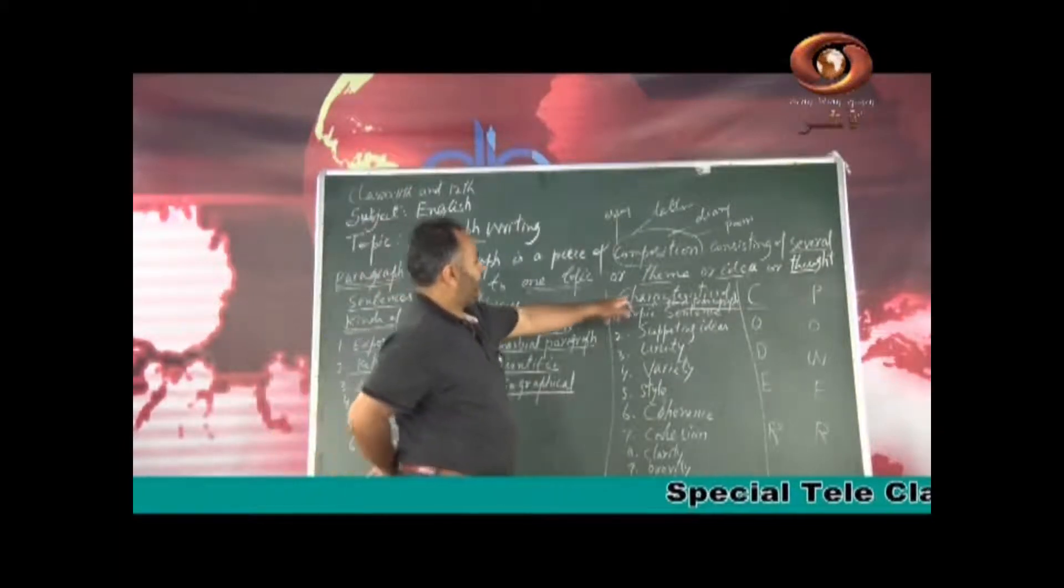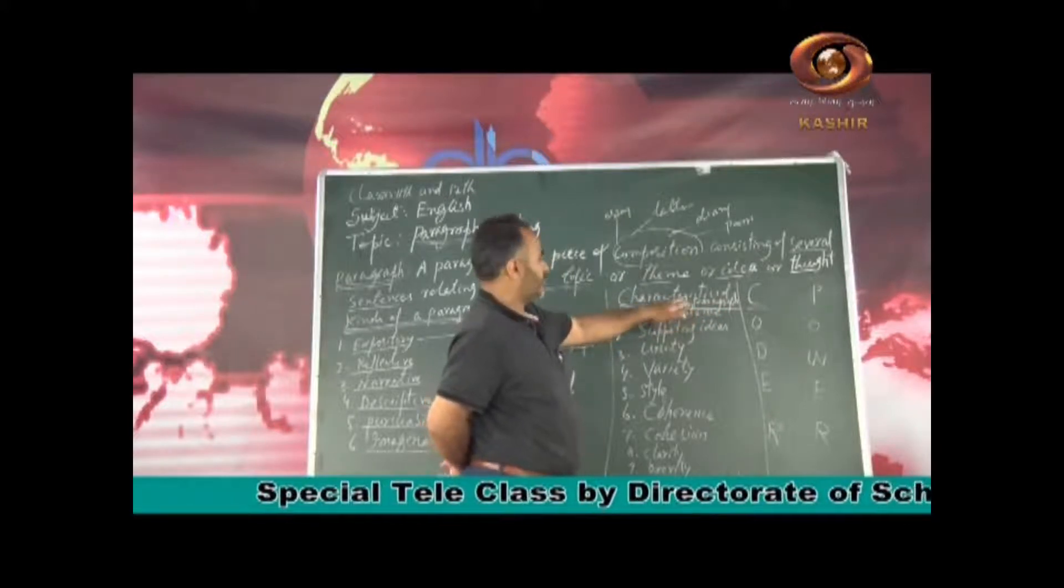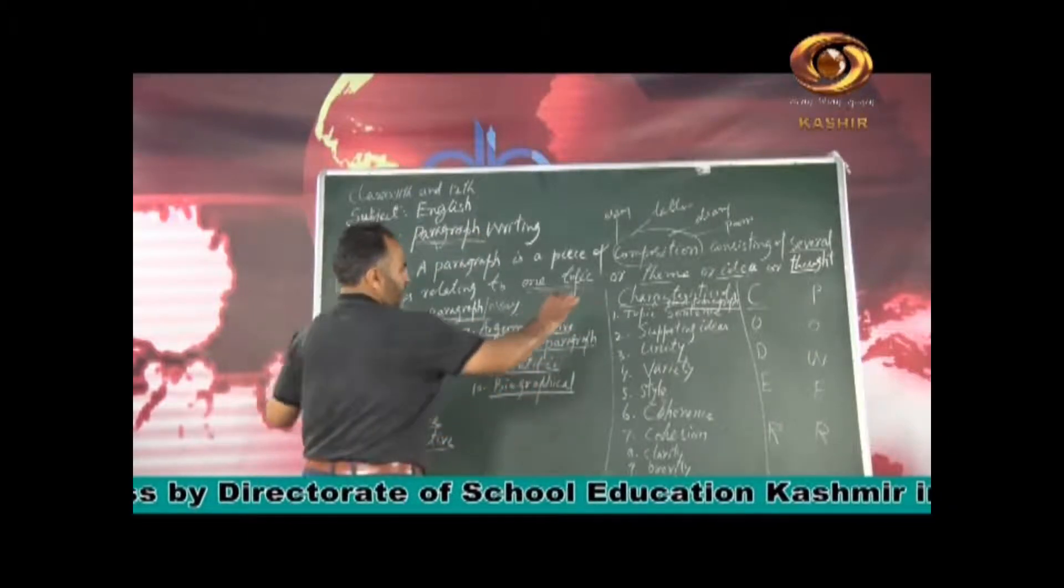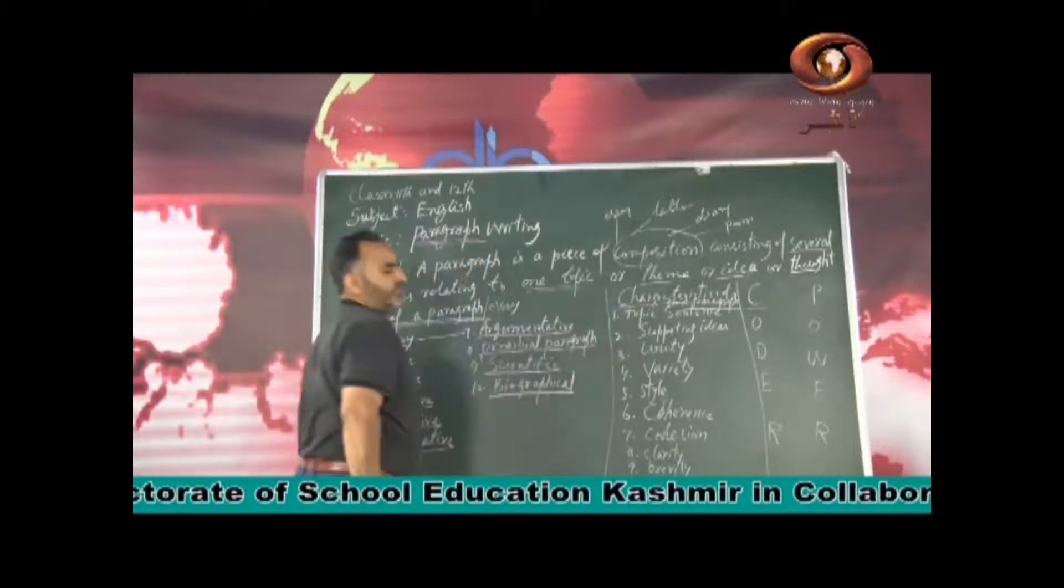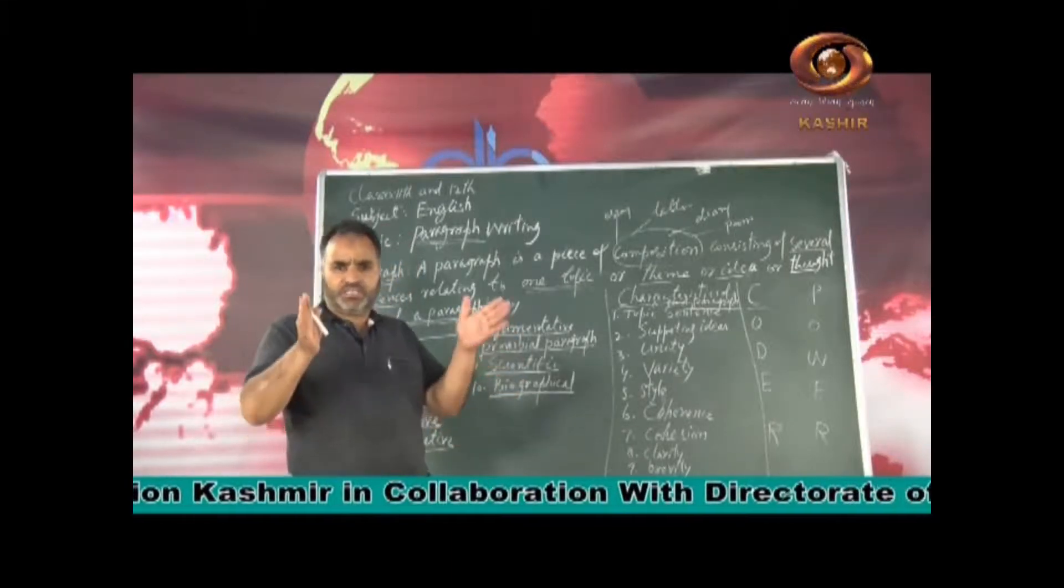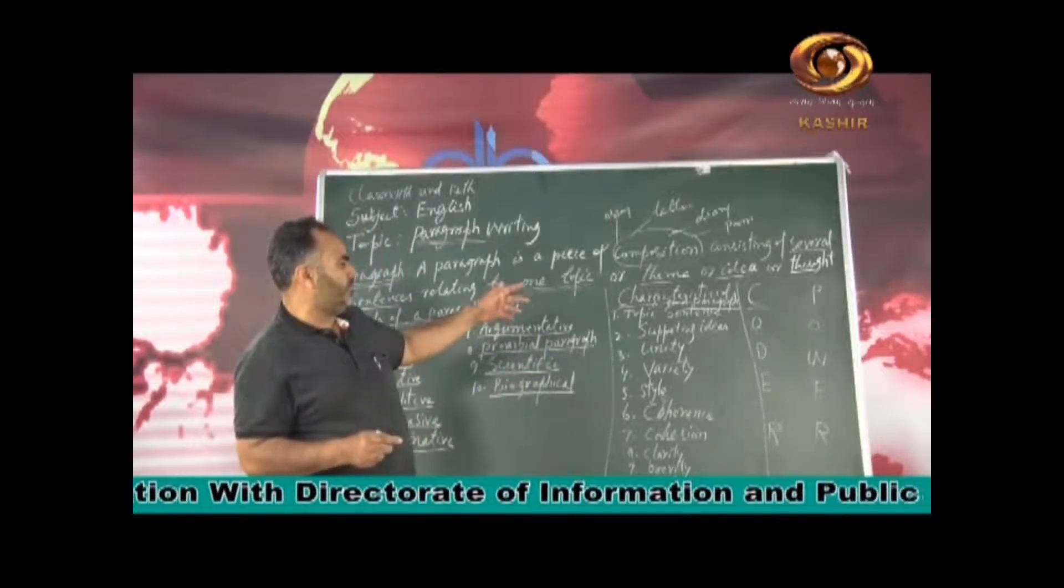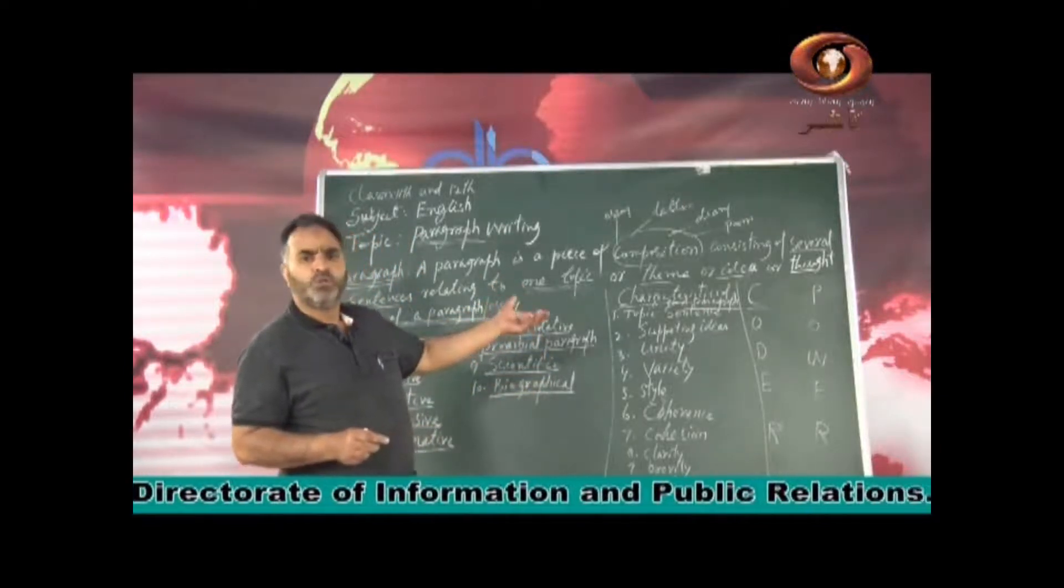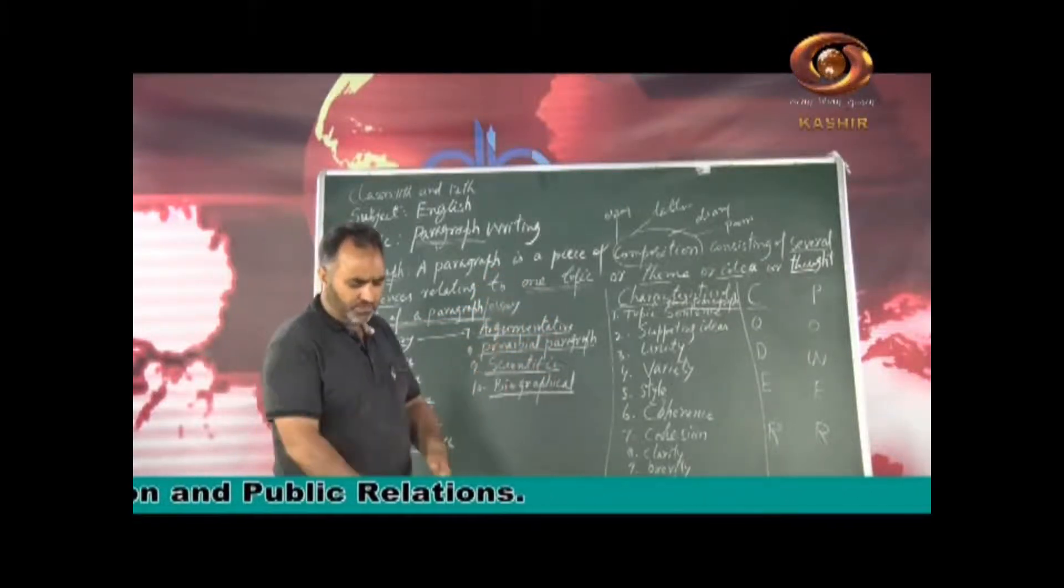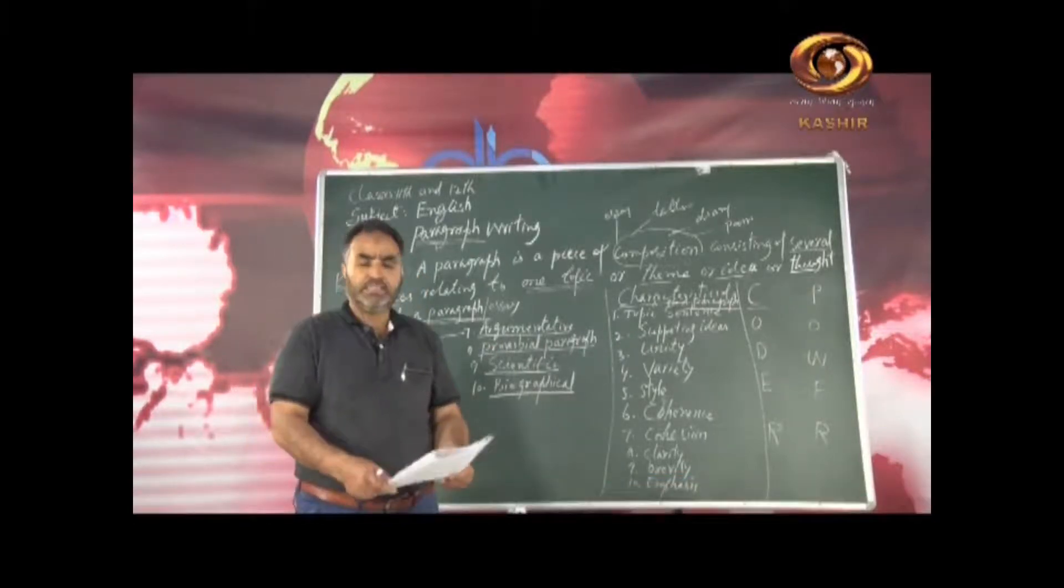Let us have a look at characteristics of a good paragraph. What are the characteristics? What are the attributes of a good paragraph? Number one is what is called as topic sentence. Topic sentence is also called the key sentence. It is the sentence with which you begin a paragraph. You see, topic sentence can come in the beginning or it can also come at the end of a paragraph. I will give an example. So let me give an example of topic sentence first in the beginning.